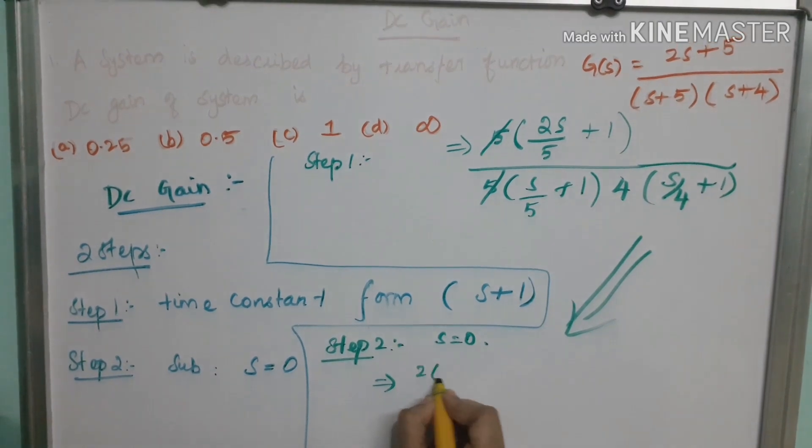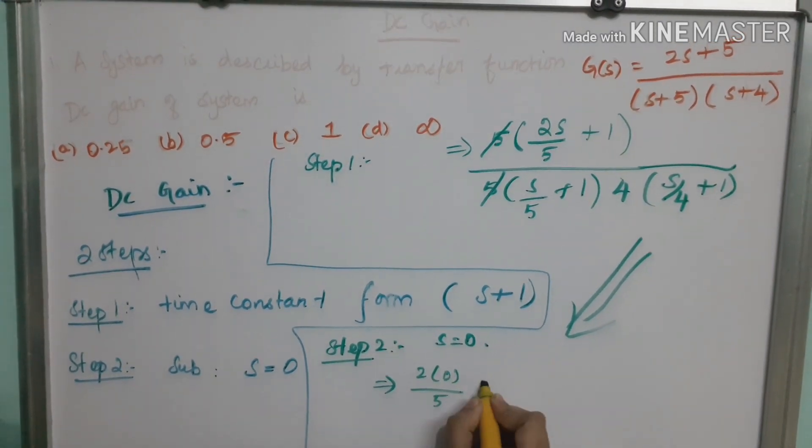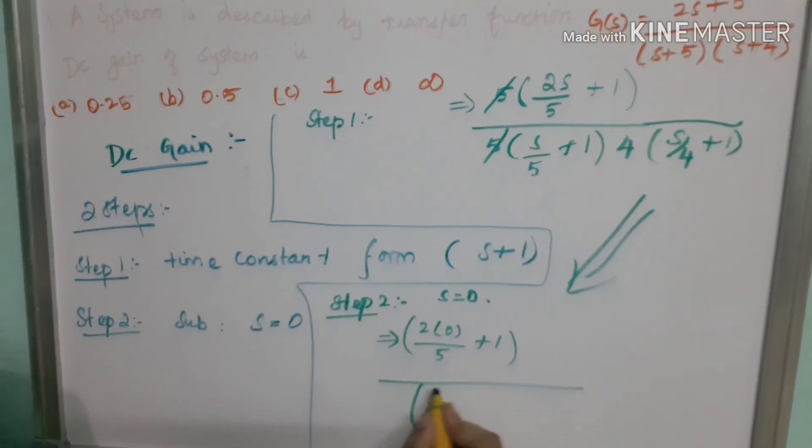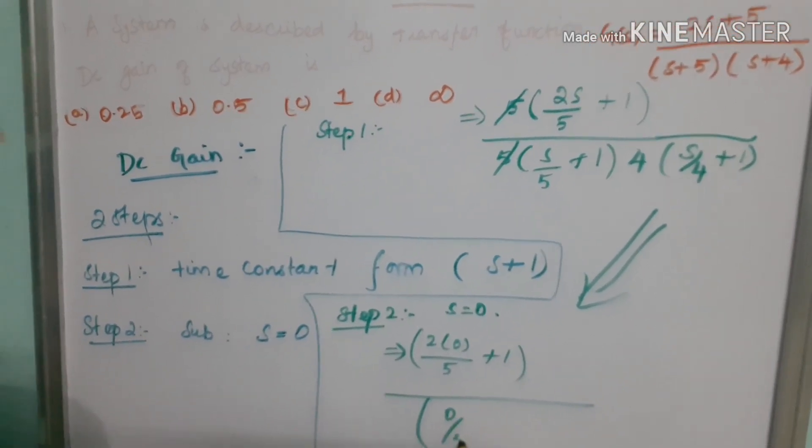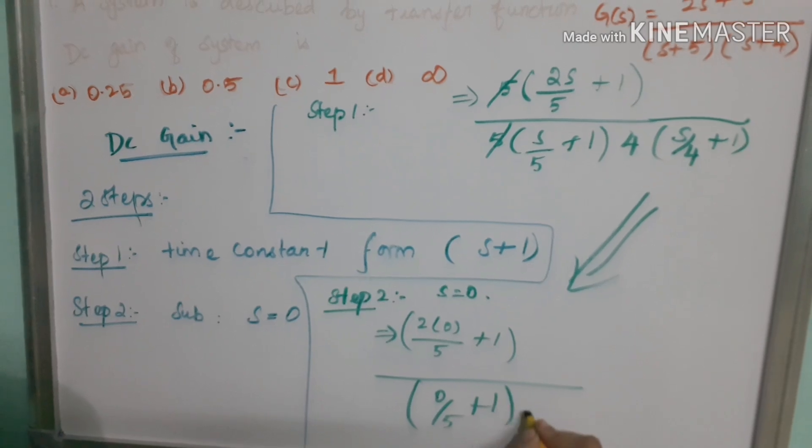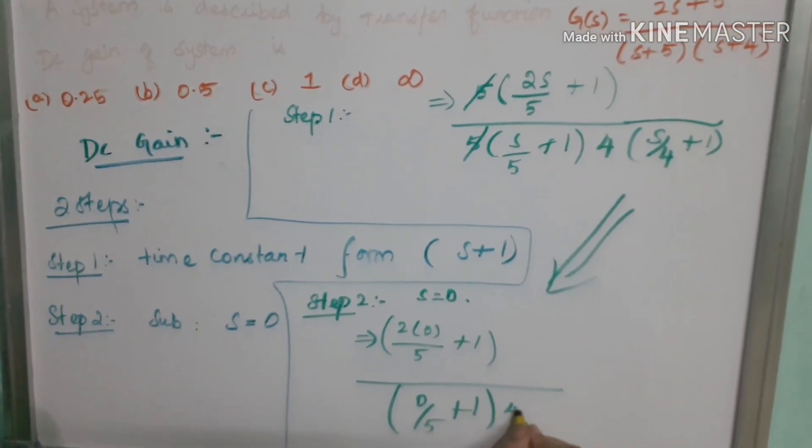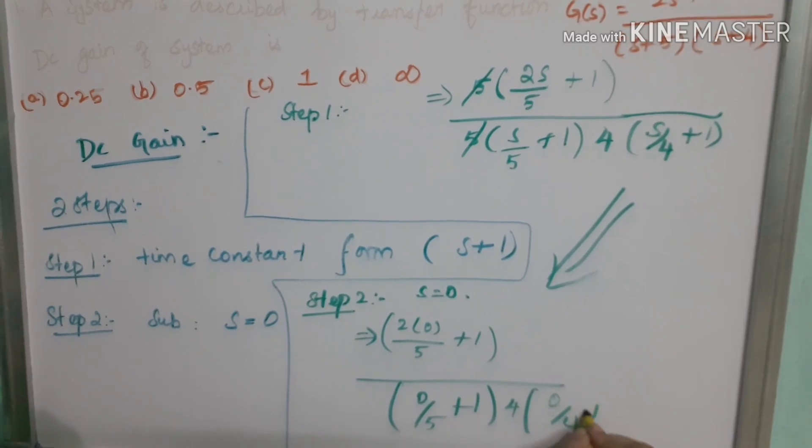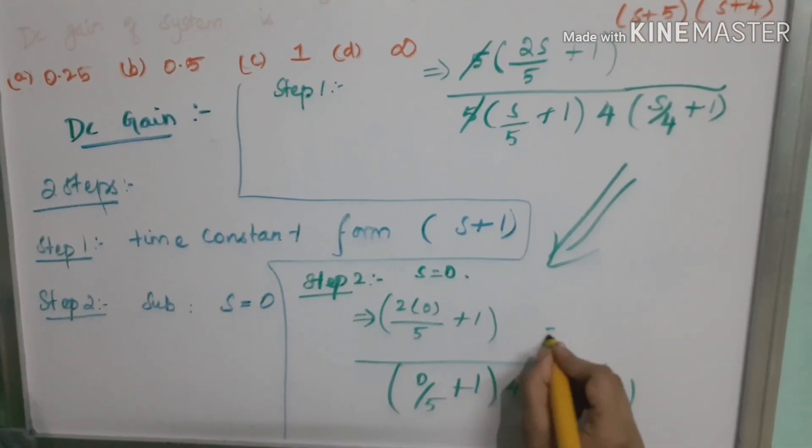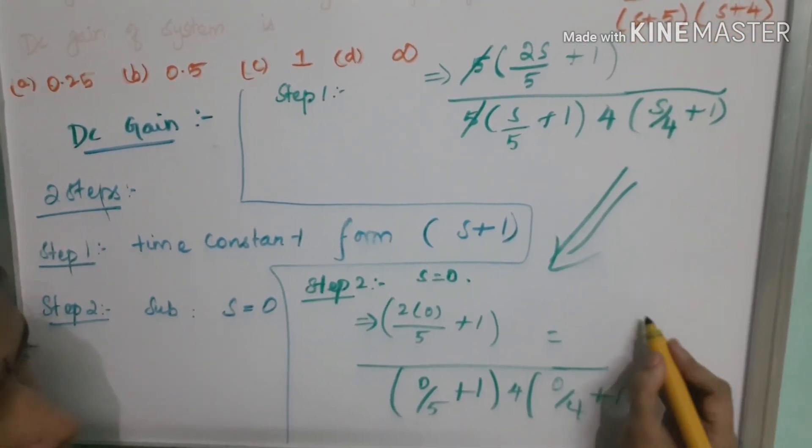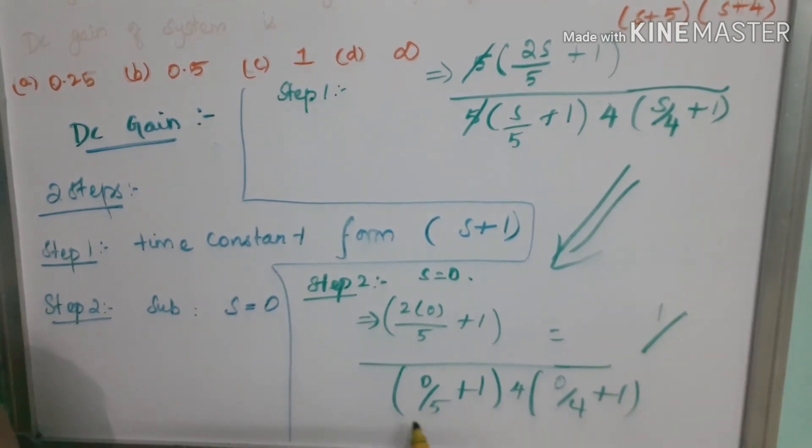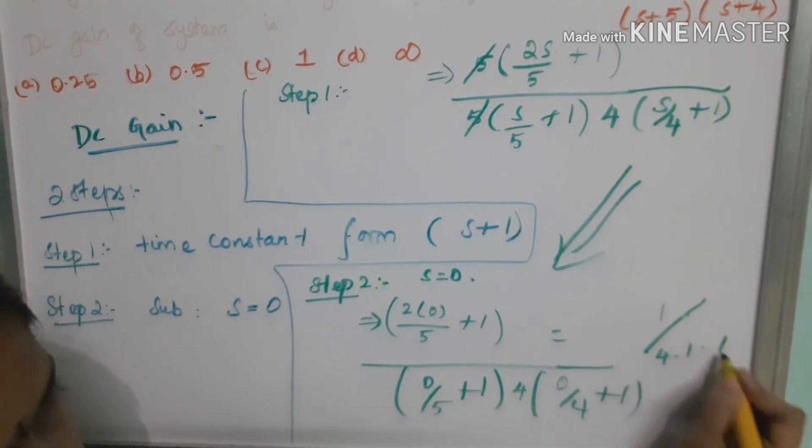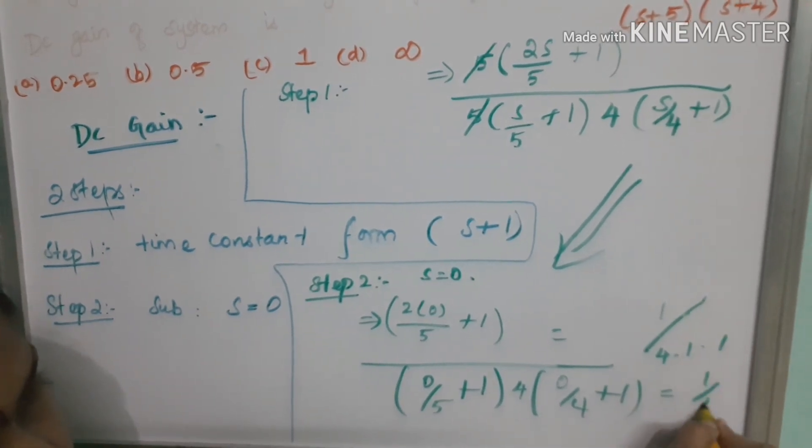S is equal to 0, 2 into 0 by 5 plus 1, divided by 0 by 5 plus 1 into 4. Again, 0 by 4 plus 1. 1 by 4 into 1 into 1. So, 1 by 4.